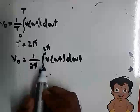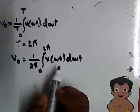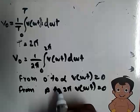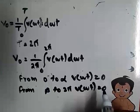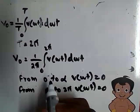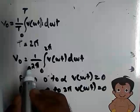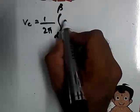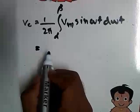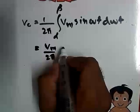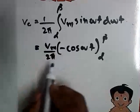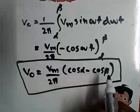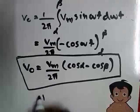From 0 to 2π we obtain the equation for V(ωt): from 0 to α, V(ωt) = 0, and from β to 2π, V(ωt) = 0. Substituting this, we rewrite the equation for average output voltage — from α to β, V(ωt) = Vm sin(ωt). By integrating, the integral of sin(ωt) is −cos(ωt), giving the average output voltage as V0 = (Vm / 2π)(cos α − cos β). Thank you for watching this video.